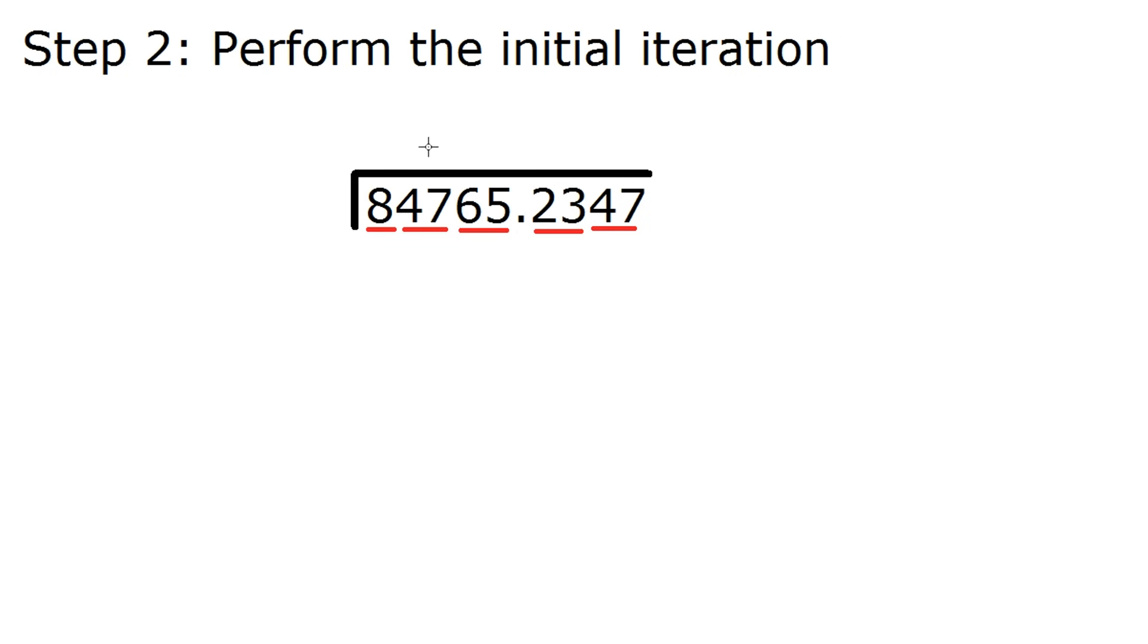So for the second step, you're going to want to draw your number in a box, sort of like you're doing a division problem, but it's going to be a little bit different. You want to look at the first group, you might have two numbers, you might have one number, just like me. But the question you're going to ask yourself is, what is the biggest number you can square without going over this group? So for me, it's just 8, and I know that 2 squared is 4, but 3 squared is 9. So 3 is too big, and 2 is just exactly what we need.